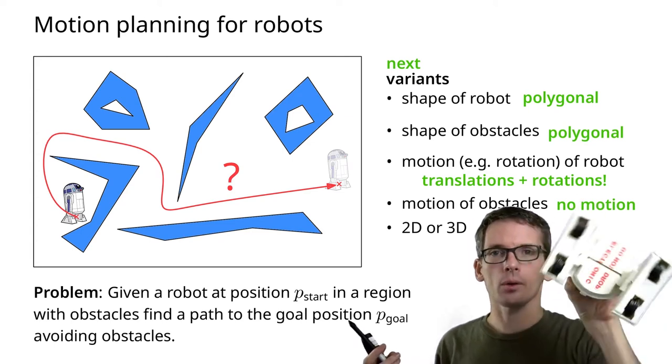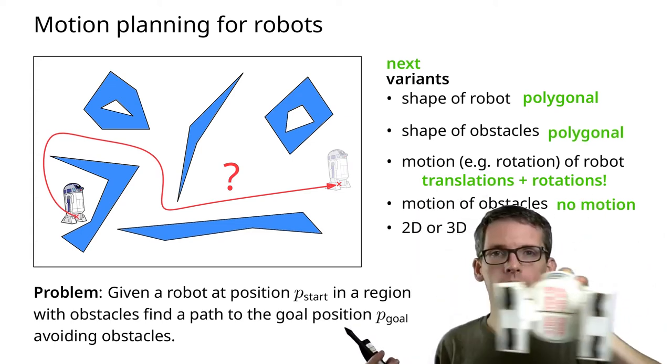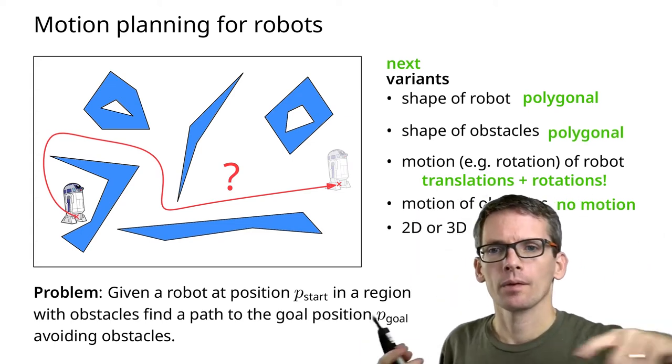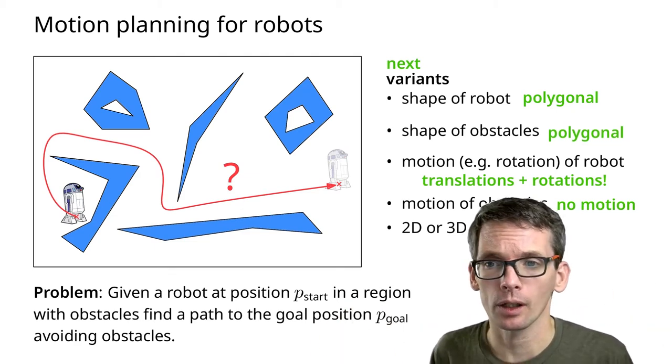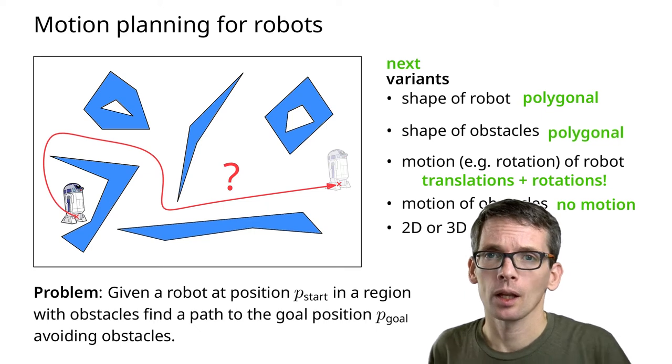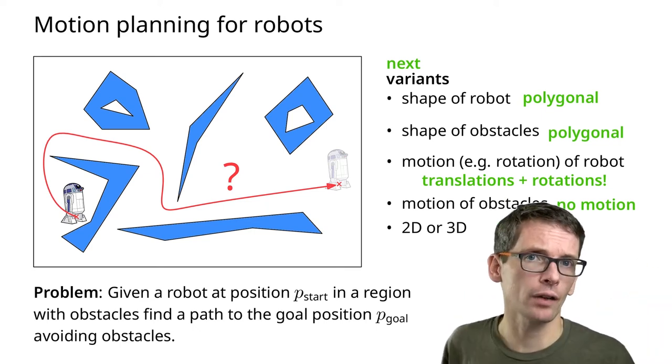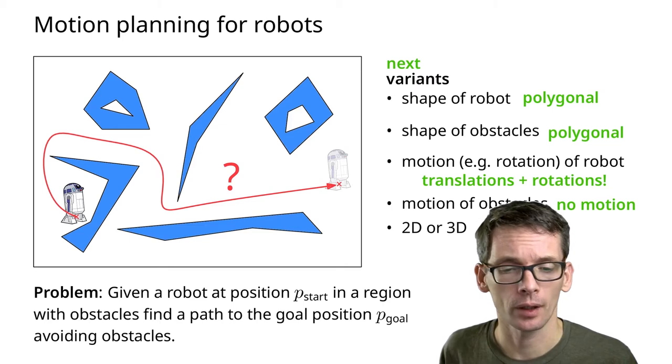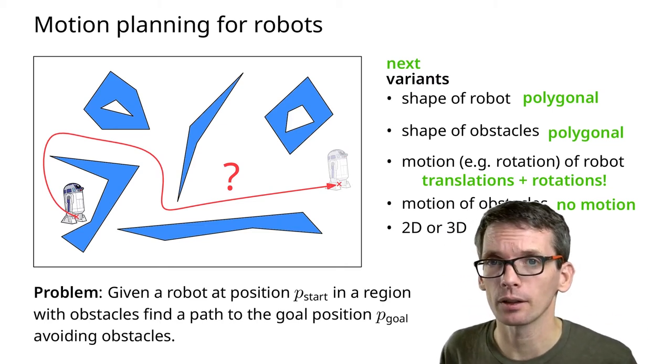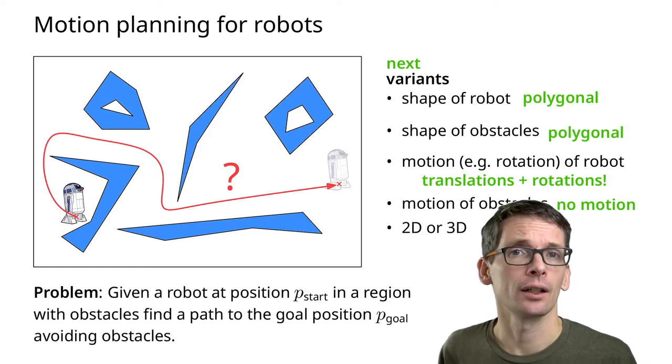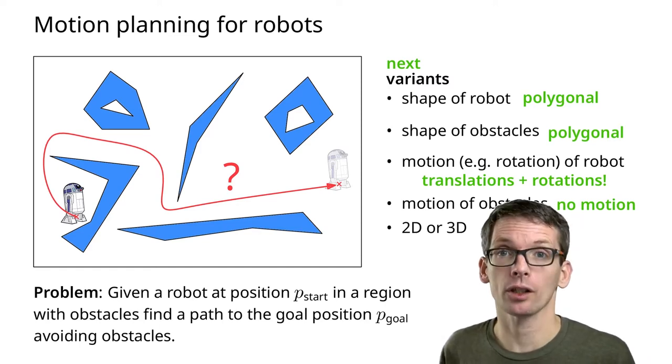The robot can rotate and still translate. The obstacles don't move and we're still in 2D. I'll give you the high-level ideas of how to handle this case. If we want to handle that case exactly, it is actually quite complex.